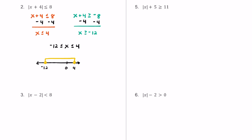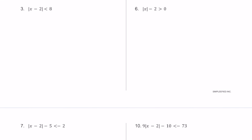For number 3, we have the absolute value of x minus 2 is less than 8. For our first statement, we write x minus 2 is less than 8. And for our second statement, we write x minus 2 is greater than negative 8. Those are our two statements.